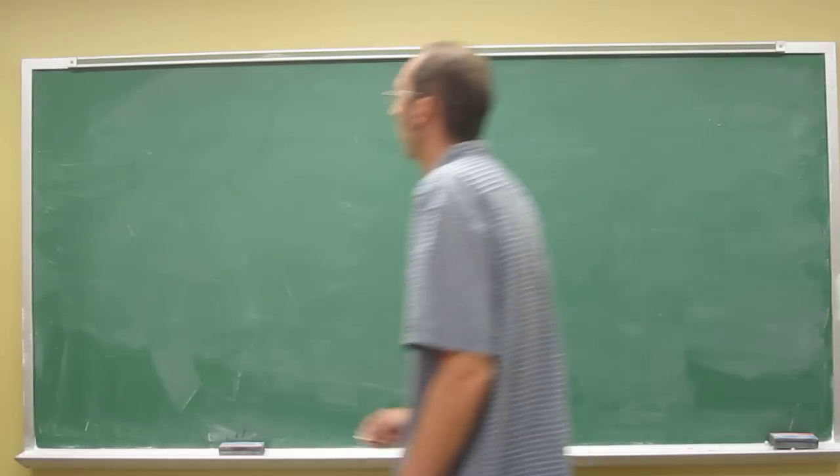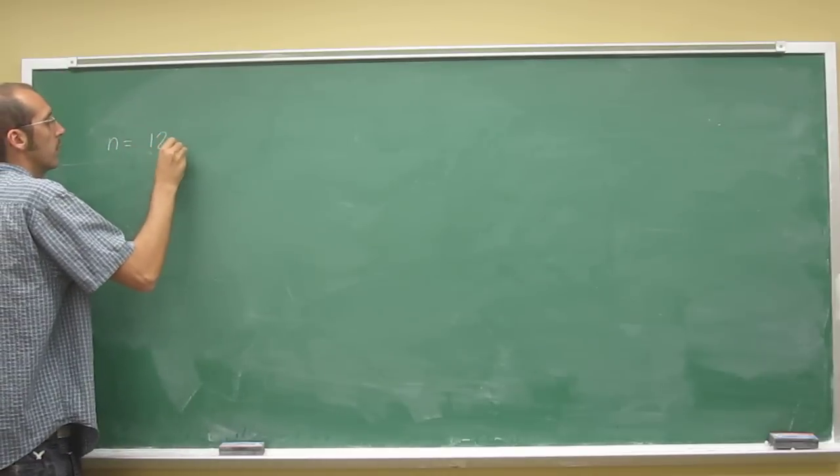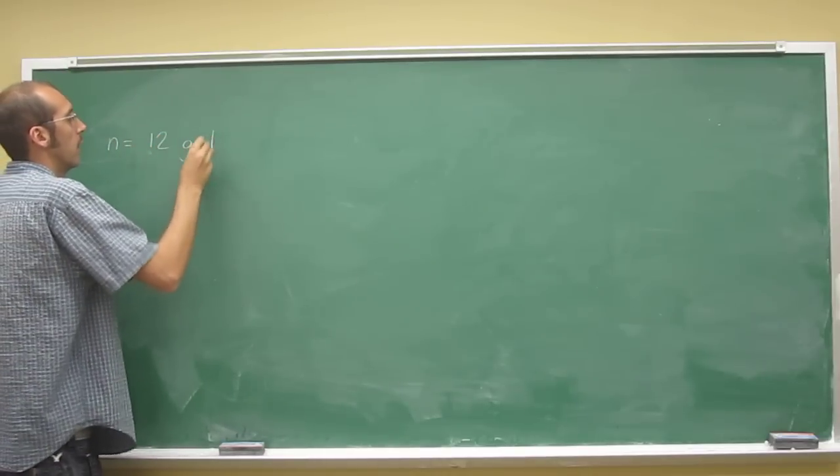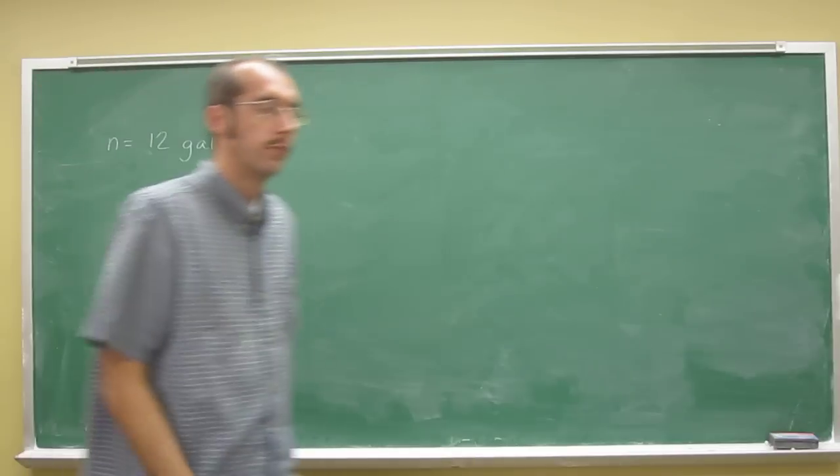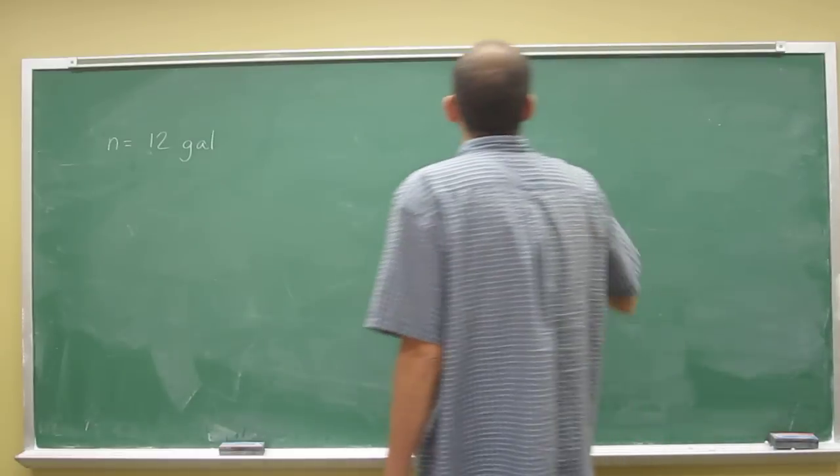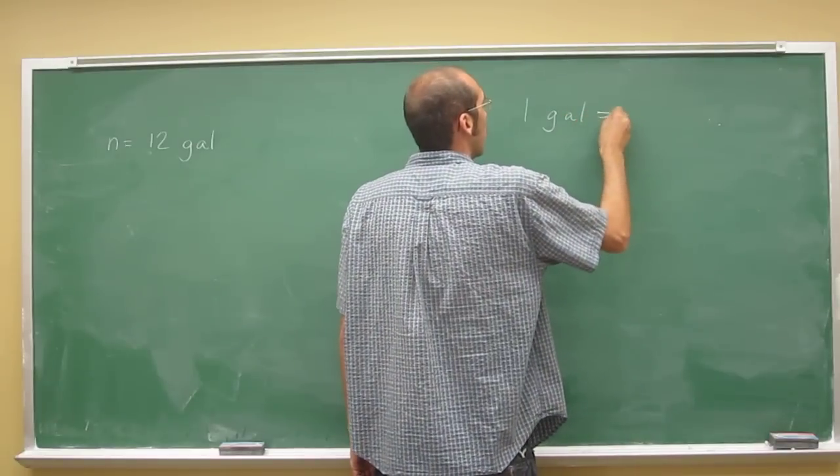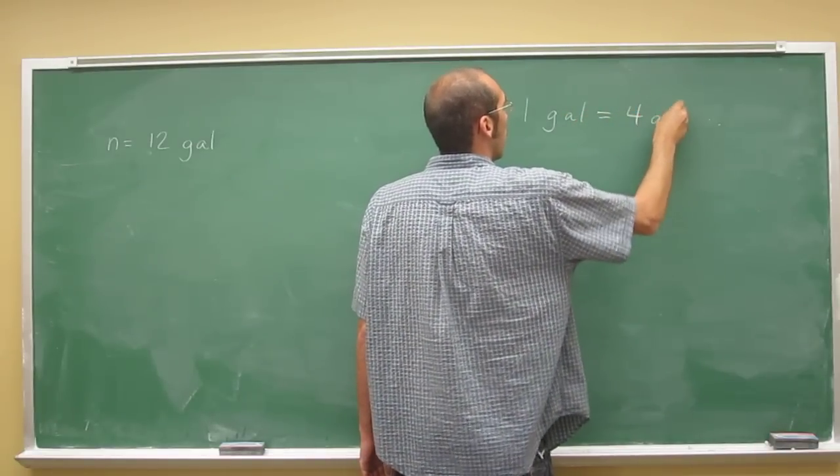Remember, the first thing we do is write N equals 12 gallons. And we don't have to memorize the conversion vector, but we got it from the page before. It's 1 gallon equals 4 quarts.